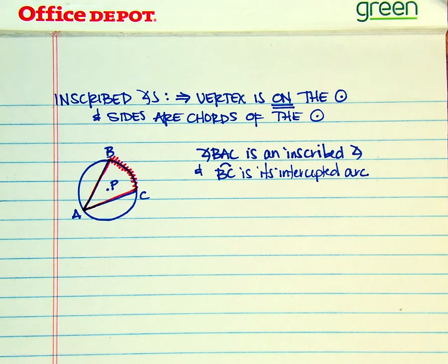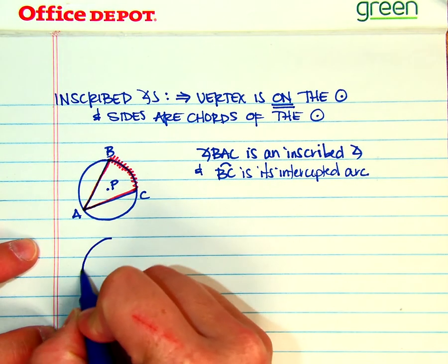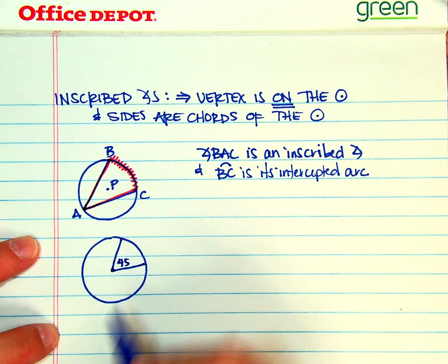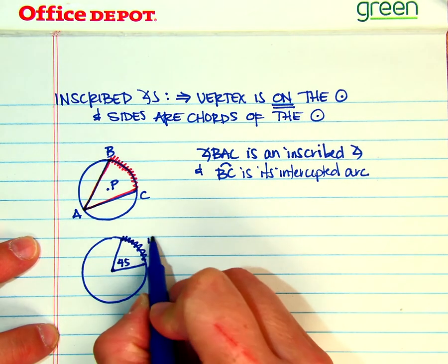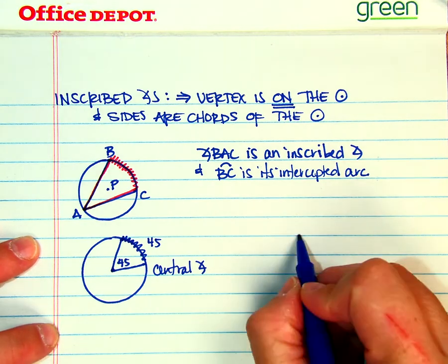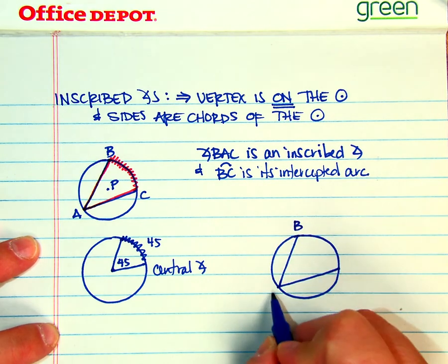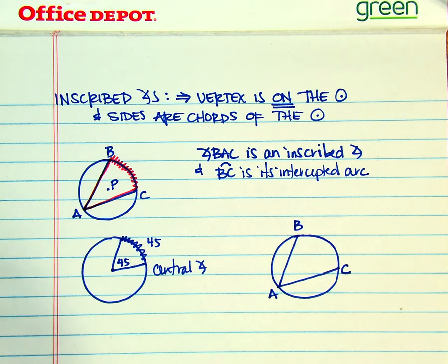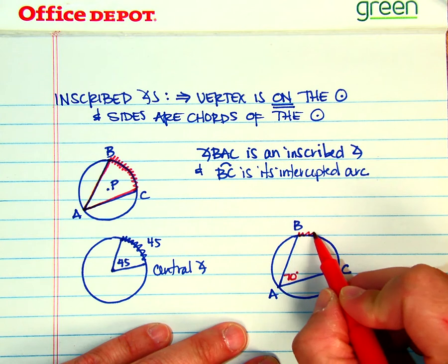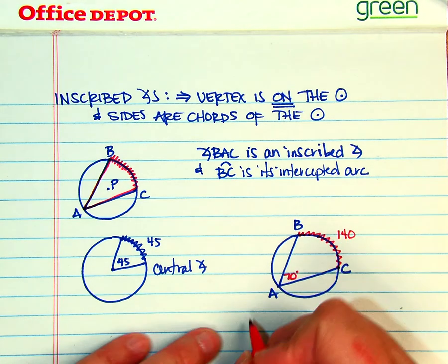One thing that I do like to show you is there is a relationship. With a central angle, if this was 45, then this arc also measured 45. So this was a central angle. With an inscribed angle, I'm going to use that BAC again. There is a relationship, and that is if the inscribed angle is let's say 70, then the intercepted arc is twice the angle. So this is going to be 140.